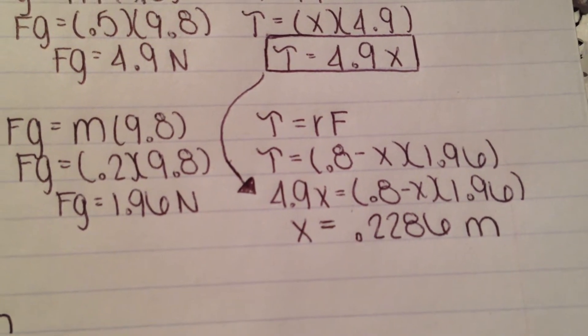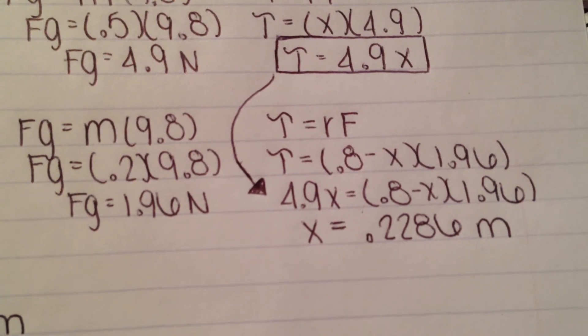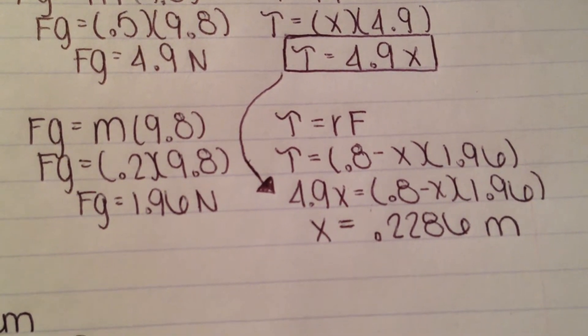4.9x equals 0.8 minus x times 1.96. Then, we do the math and find x, which should be 0.2286 meters.